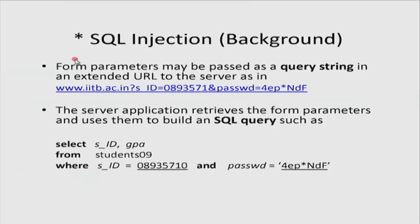Another example of code injection — this is basically a code injection attack where you are injecting JavaScript, but you could also inject SQL. You must have seen this kind of URL — it is called an extended URL with a query string. After the question mark, there is a parameter name and a parameter value, and between parameter name-value pairs there is an ampersand sign. So it says 'id equals this' and 'password equals this' — which came from a form on the browser with an ID field and a password field.